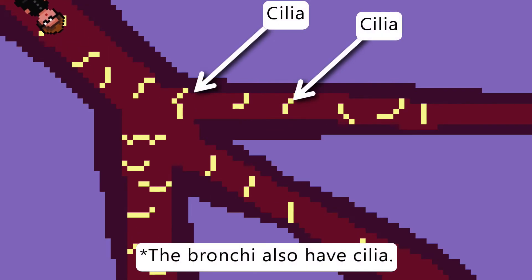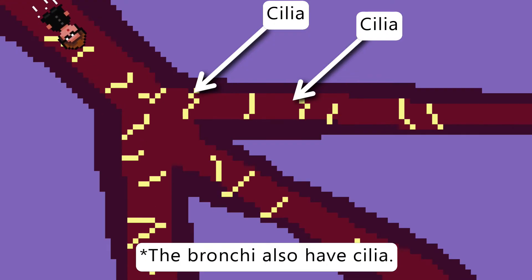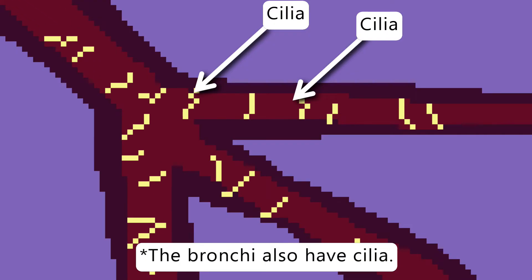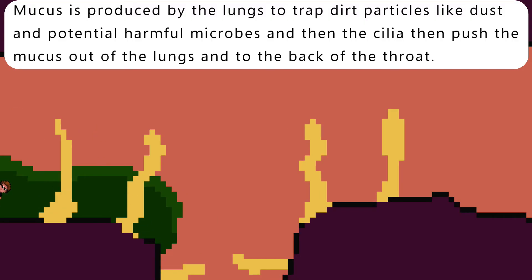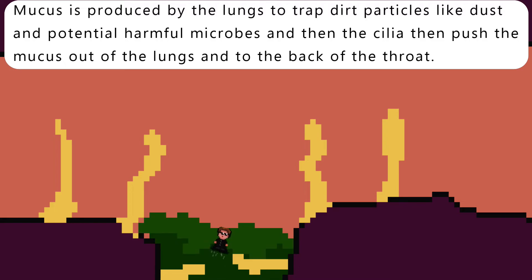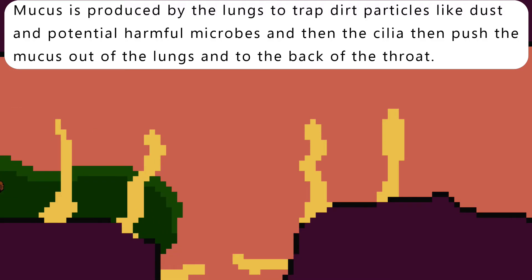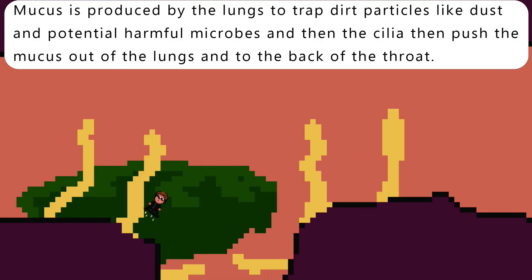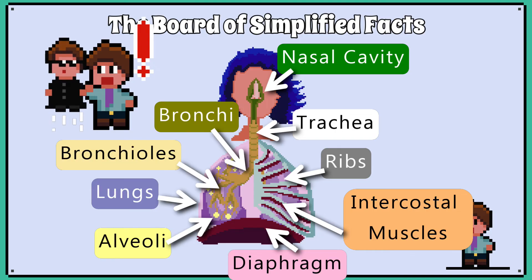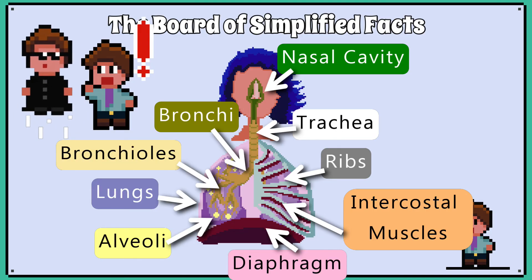The lungs are also adapted to keep foreign objects and microorganisms from entering them. Cilia line the bronchial walls and are hair-like structures which can flick back and forth. Mucus is produced by the lungs to trap dirt particles, like dust, and potentially harmful microbes. The cilia then push the mucus out of the lungs and to the back of the throat, making it much easier to cough up.